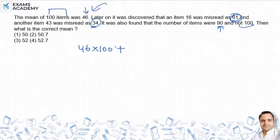Plus the values we should have added. What are the values? 16 and 43. We add 16 plus 43. Then we subtract the incorrect values that were used, minus 61 and minus 34.